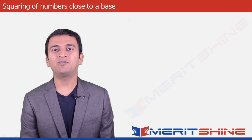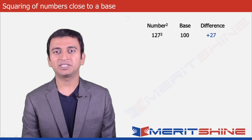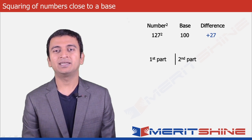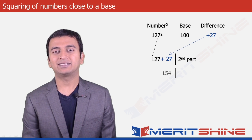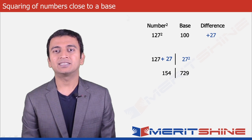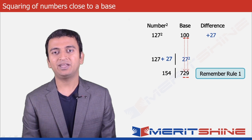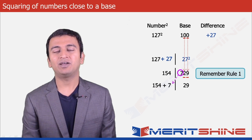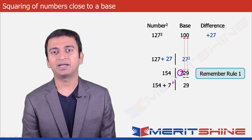Let us now try to find the square of 127. Here our base would be 100 and the difference would be plus 27. The first part would be the number added to the difference, which is 127 plus 27 giving us 154, and the second part would be the square of the difference, which is 27 squared giving us 729. Since the second part can have as many digits as the number of zeros in the base, the extra 7 will be carried over to the first part giving us 154 plus 7 as 161, and we will be left with 29 in the second part.